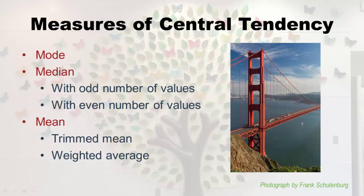These are the measures of central tendency we're going to go over: mode, median, and mean. The median is calculated slightly differently depending on whether you have an odd or even number of values. And then the mean — a lot of you already know what a mean is, but there are a couple of special means: a trimmed mean and a weighted average. Mean and average mean the same thing, so I'm not sure why they chose the word average for that one.